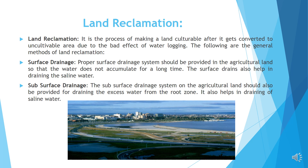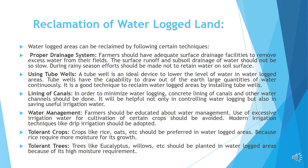Subsurface drainage: A subsurface drainage system on the agricultural land should also be provided for draining the excess water from the root zone. It also helps in draining of saline water. Waterlogged areas can be reclaimed by the following techniques. Proper drainage system: Farmers should have adequate surface drainage facilities to remove excess water from their fields; the surface runoff and sub-soil drainage should not be too slow. Using tube wells: A tube well is an ideal device to lower the level of water in waterlogged areas. Tube wells have the capability to draw out large quantities of water from the earth continuously. Lining of canals: Concrete lining of canals and other water channels should be done to minimize waterlogging. It is helpful not only in controlling waterlogging but also in saving useful irrigation water.